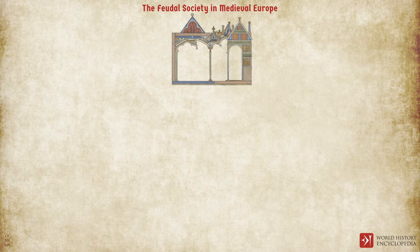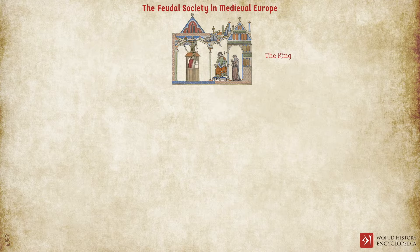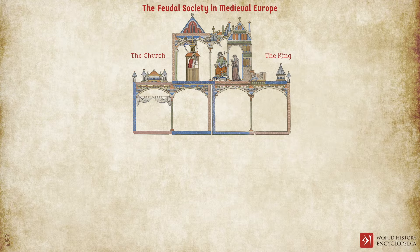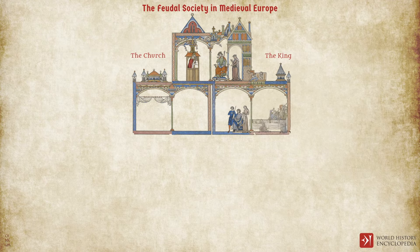At the top of the social hierarchy of course was the king, who owned most of the land other than some land that would have been owned by the church. For example, William the Conqueror, who reigned in England between 1066 and 1087, considered all of the lands of England his personal property, and so he could give out parcels of land to a noble who would in return promise their loyalty and service and become the king's vassal.